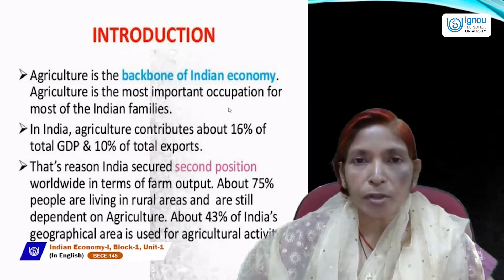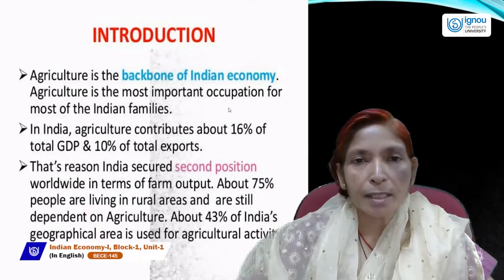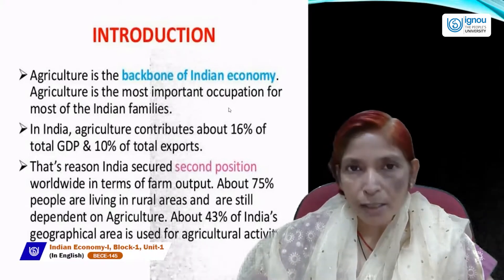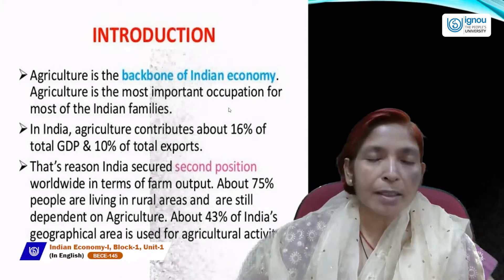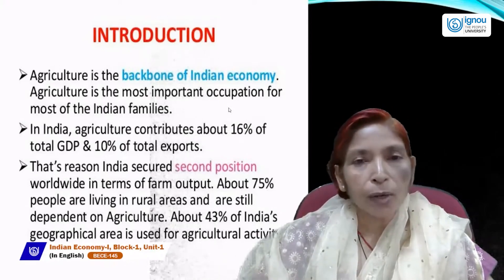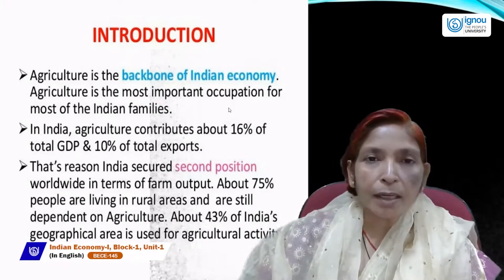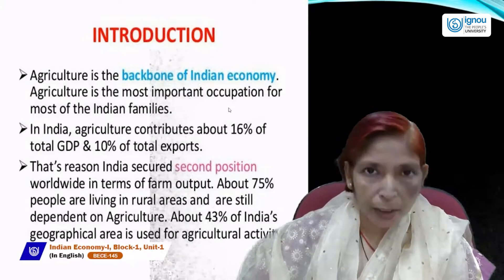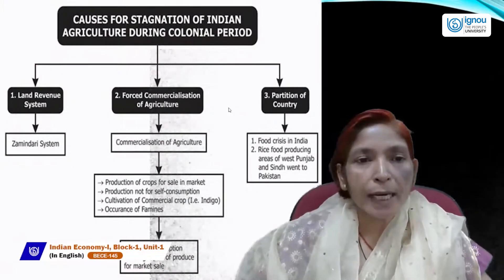At present, agriculture contributes 16% to GDP and 10% to total exports. More than half of the country's people are still dependent on the agriculture sector, compared to nearly 80% earlier who were engaged in agriculture and allied activities like fishing, quarrying, and mining. About 43% of the geographical area is used for agricultural activities. Next, we will discuss the causes for stagnation of Indian agriculture during the colonial period.